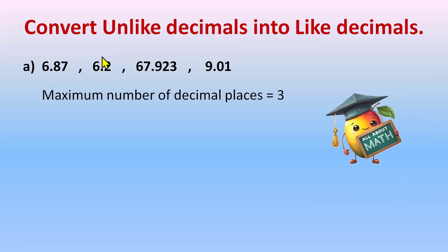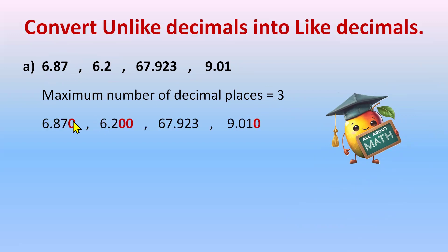So it becomes 6.870. Here I need to add two zeros to make it three decimal places. Here I don't need to add any zero. Here I need to add one zero — and it should be on the right side, not in between and not on the left side. Now you can check: one, two, three decimal places — all are like decimals now.